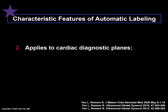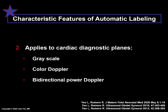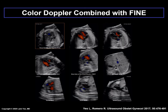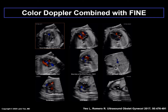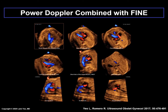Labeling can be applied to cardiac diagnostic planes that are in grayscale, color Doppler, or bidirectional power Doppler. This video clip shows color Doppler combined with FINE technology applied to a normal fetal heart. The diagnostic planes are shown first without and then with automatic labeling activated through intelligent navigation. This video clip shows bidirectional power Doppler, also known as S-flow, combined with FINE technology applied to a normal fetal heart.